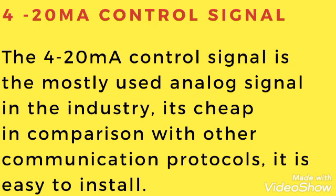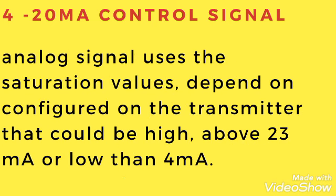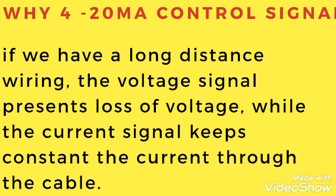HART is popular because of its low cost and reliability with the 4-20mA control signal. The 4-20mA control signal is the most commonly used analog signal in the industry, and it is cheap compared to other protocols. Analog signals use saturation values depending on the configuration of the transmitter, which could be high above 23mA or below 4mA.